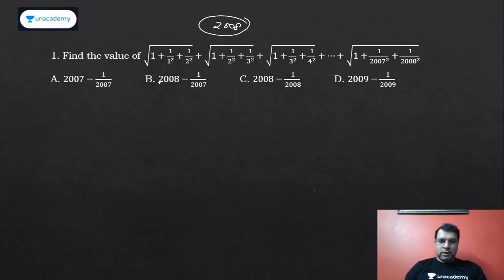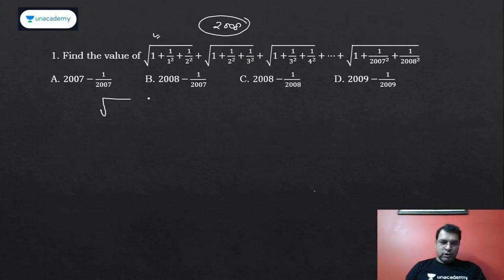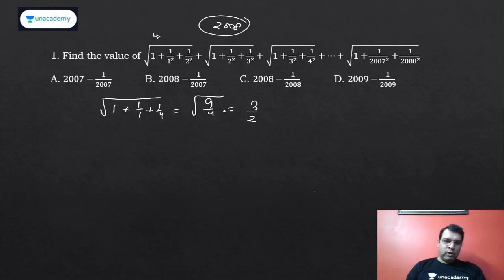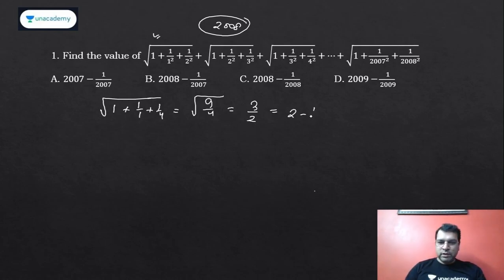You can put the values of n in the options and check the answer. But because n is not given here, we can talk about the general term in terms of number of terms. Suppose there had been only one term — that would be √(1 + 1/1 + 1/4), which is √(9/4) = 3/2. So if there had been only one term, the sum would be 3/2. Now look at the options — all are in the form of something minus 1 upon something. So 3/2 can be written as 2 minus 1 by 2.